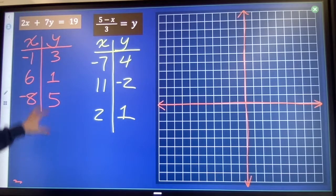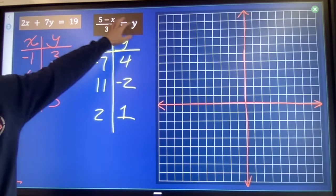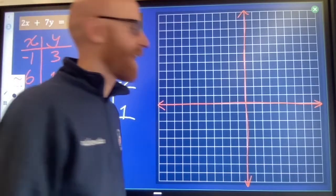I've got an xy table of values that make this true, xy table values that make that true. Then I'm going to graph these guys. They should end up to be in straight lines.